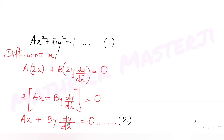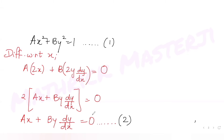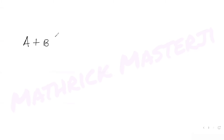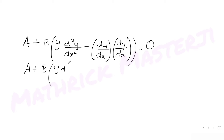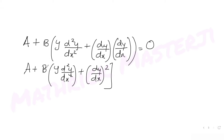Now differentiating equation 2 again: the derivative of ax gives a. For b·y·(dy/dx), applying the product rule: y·(d²y/dx²) + (dy/dx)·(dy/dx). So we get: a + b[y·(d²y/dx²) + (dy/dx)²] = 0. This is equation 3.